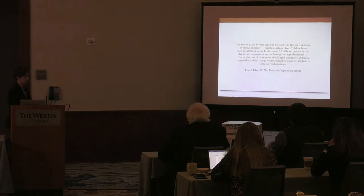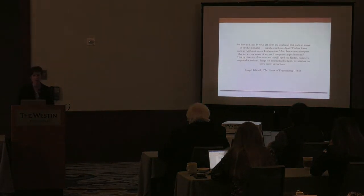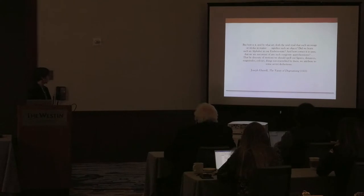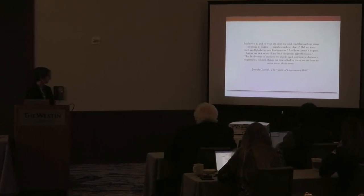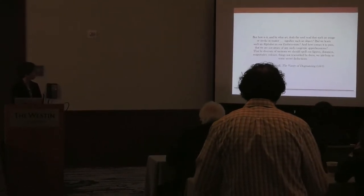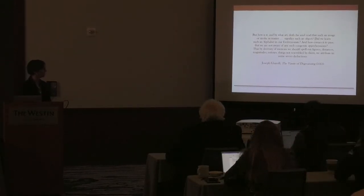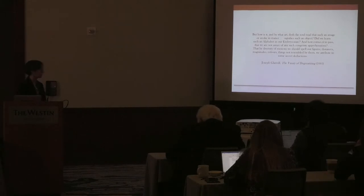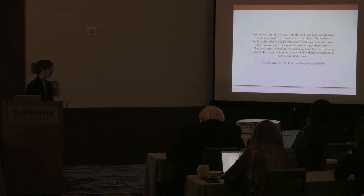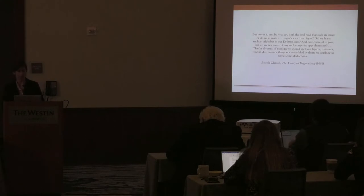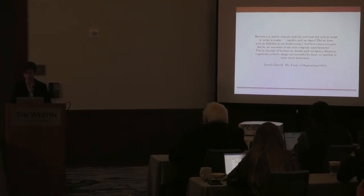I thought I would throw out this one, which is one of my favorites from Joseph Glanvill in his The Vanity of Dogmatizing from 1661, where he says, 'But how is it, and by what art, doth the soul read that such an image or stroke in matter signifies such an object? Did we learn such an alphabet in our embryo state? And how comes it to pass that we are not aware of any such cognate apprehensions? That by diversity of motions we should spell out figures, distances, magnitudes, colors, things not resembled by them, we attribute to some secret deductions.' I think part of what we are all here to do today is not to have secret deductions, but to have open deductions about what the secrets really are.